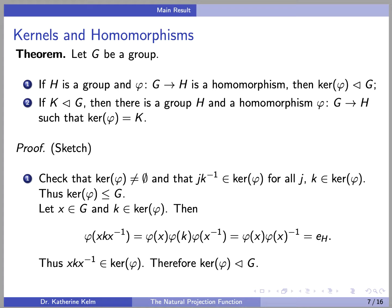It remains to show that the kernel of phi is normal in G. Let X be an element of G and let K be an element of the kernel of phi. We need to conjugate K by X and make sure we wind up back in the kernel. To show an element is in the kernel, you take phi of it and check you get the identity of H. So phi of X K X-inverse, by the properties of homomorphisms, equals phi of X times phi of K times phi of X-inverse. But phi of K equals the identity because K belongs to the kernel, so we get phi of X times phi of X-inverse, which is the identity on H. Therefore X K X-inverse belongs to the kernel of phi, so the kernel of phi is a normal subgroup of G.